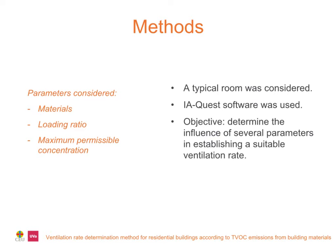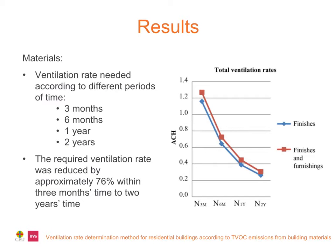A typical room was considered and several emission sources were introduced using the database included in the IA-Quest software to achieve the main objective of this study, which is to show the influence of several parameters in establishing a suitable ventilation rate. These parameters are the materials, which are the indoor pollution emission sources, the loading ratio, which is the ratio between the surface of the emission source and the volume of the room, and the maximum permissible concentration. The image shows the ventilation rate needed according to different periods of time since the application of the materials in the indoor space.